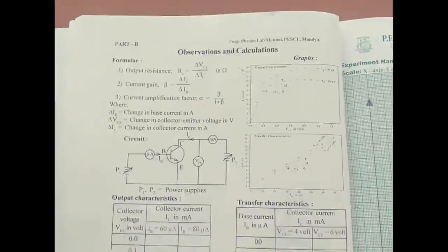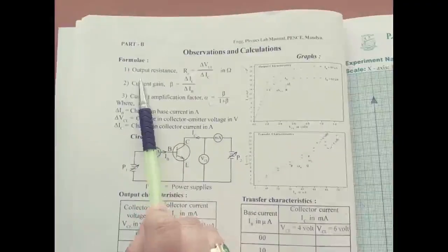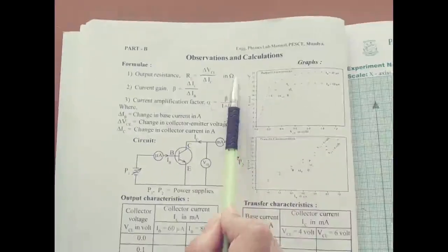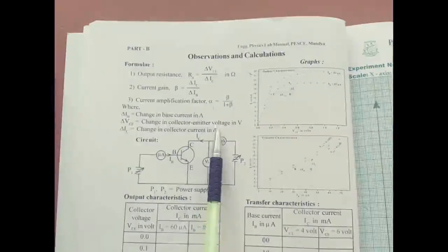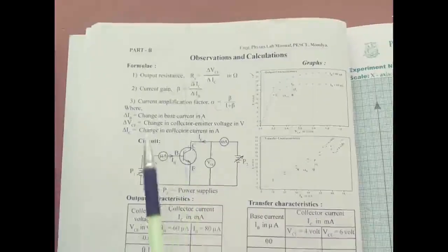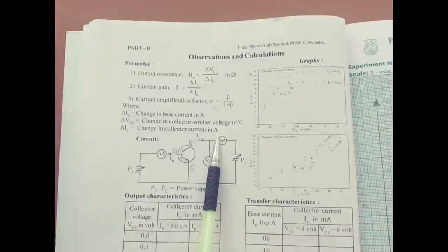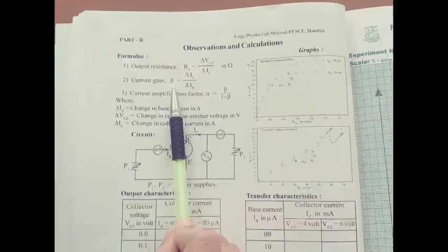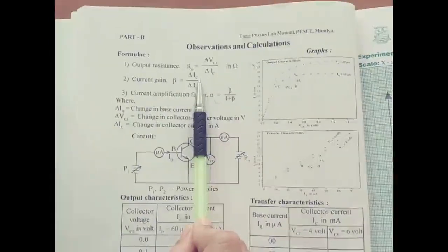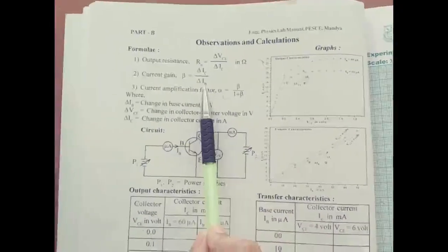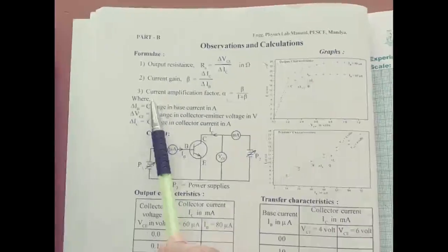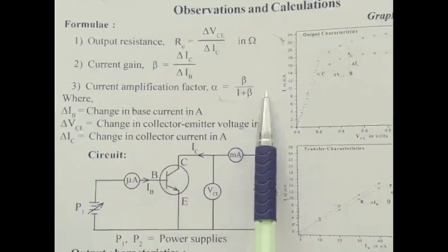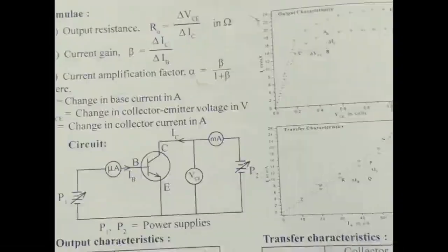Observation and Calculation. The formula to find output resistance R0 is: R0 = ΔVce / ΔIc (in ohms), where ΔVCE is the change in collector-to-emitter voltage and ΔIC is the change in collector current. Similarly, current gain beta (β) = ΔIC / ΔIB. The current amplification factor alpha (α) = β / (1 + β).